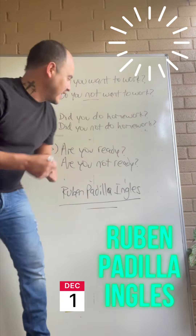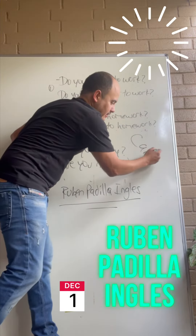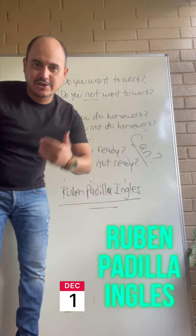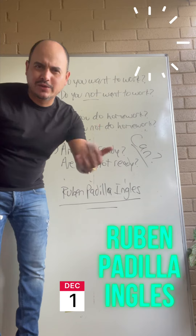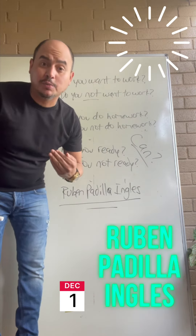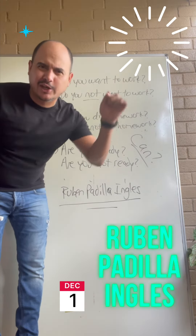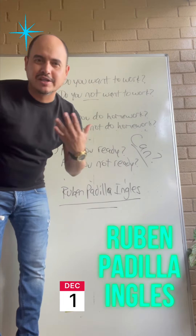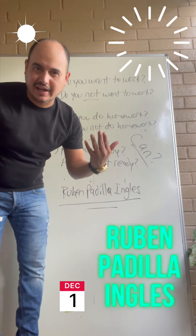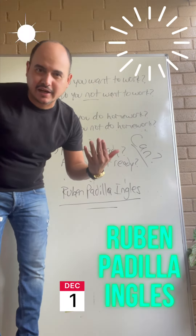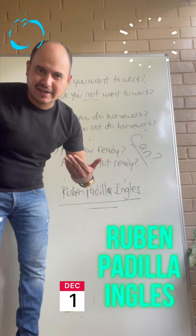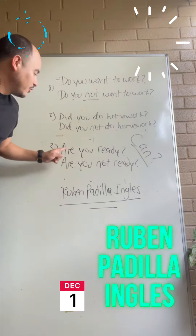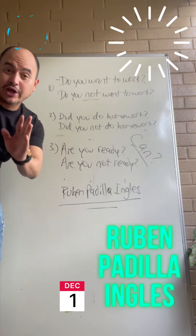Okay, let's do one more. Cómo preguntarías a alguien usando 'can'? Cómo le preguntarías 'puedes estar aquí a la una'? Can you be here at one? Ahora, cómo harías la pregunta 'no puedes estar aquí a la una'? Can you not be here at one?